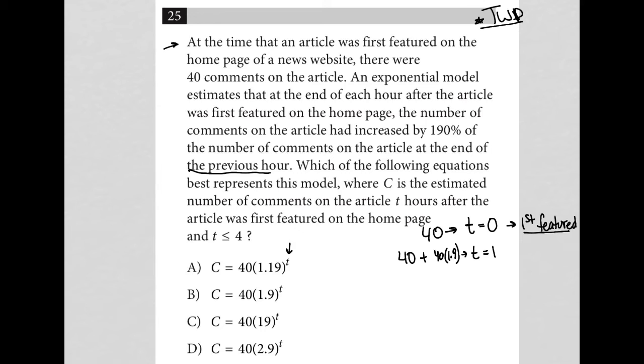One hour after being featured. The next sentence says which of the following equations best represents this model where C is the estimated number of comments on the article T hours after the article was first featured on the homepage and T is less than or equal to four. That means if we need to, we could really only go up to T equals four to test out these points. Typically I don't have to go that far.